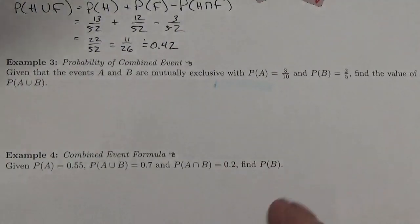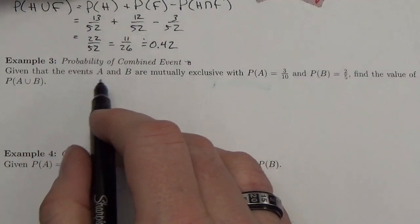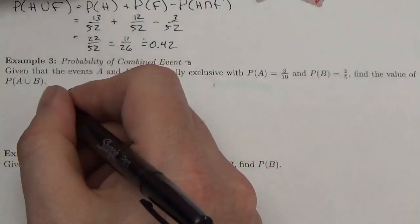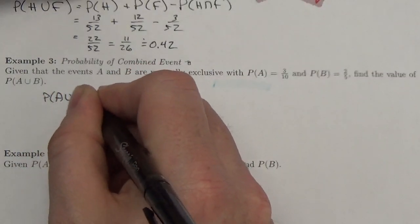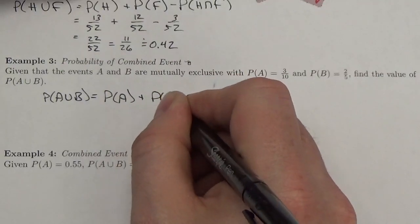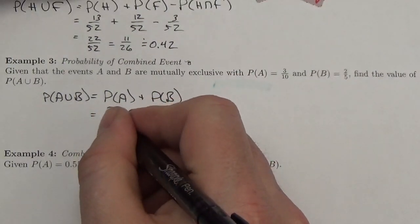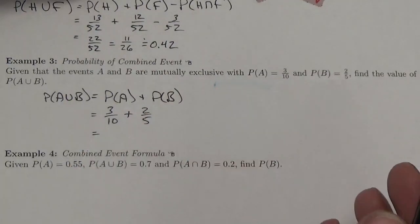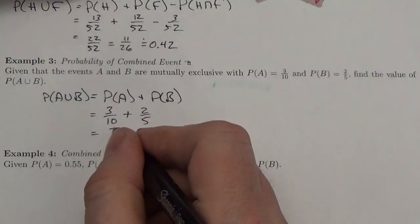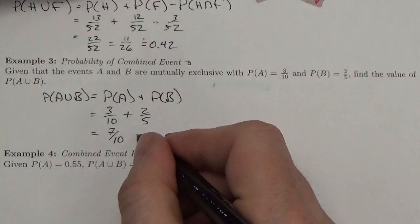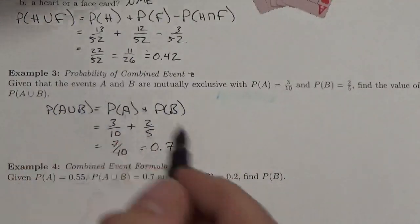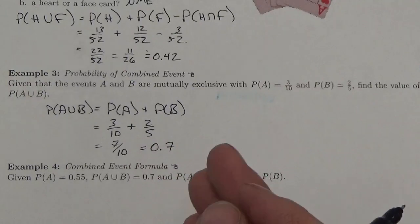Given that events A and B are mutually exclusive with P(A) = 3/10 and P(B) = 2/5, find P(A union B). Since they're mutually exclusive, P(A union B) = P(A) + P(B) = 3/10 + 4/10 = 7/10, or 0.7. You just need to recognize the correct form of the equation.